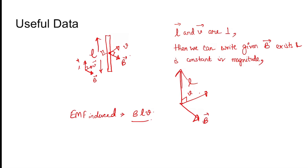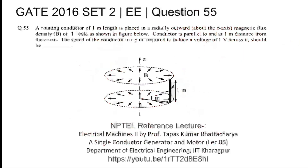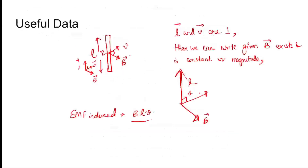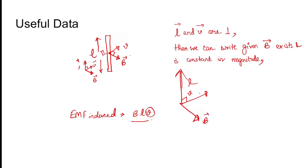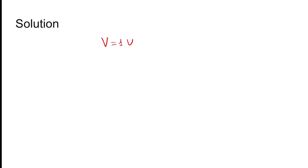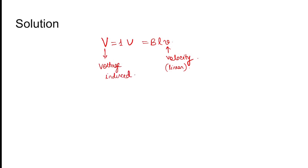The EMF induced is BLV. We are asked for the RPM, which can be found once we determine the tangential velocity. Coming to the solution: the induced voltage V equals BLV, where small v is the linear velocity and capital V is the induced voltage. B and L are both given as 1 tesla and 1 meter respectively.